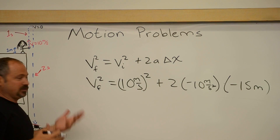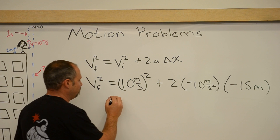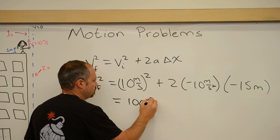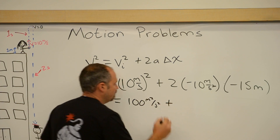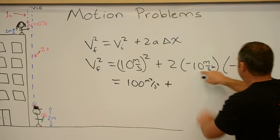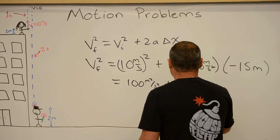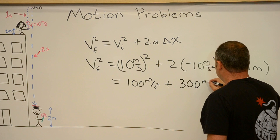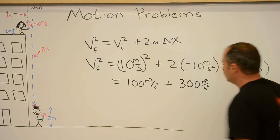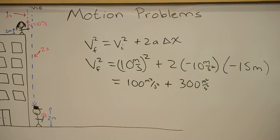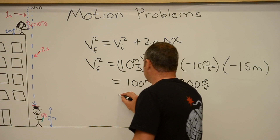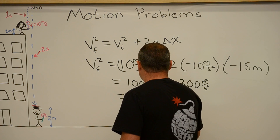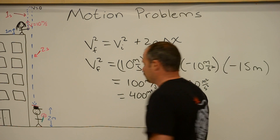Now all that's left to do is square and multiply. 10 squared is 100 meters squared per second squared, plus 2 times 10 times 15, which is 300. The units are meters per second squared times meters — meters squared per second squared. Same units, as it should be. Adding them gives 400 meters squared per second squared.